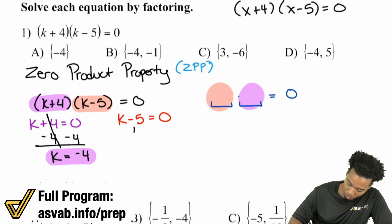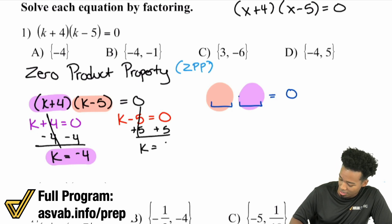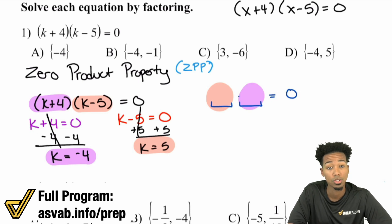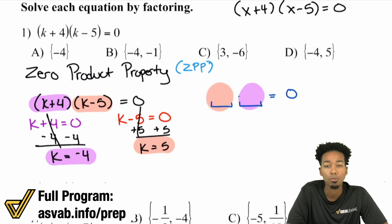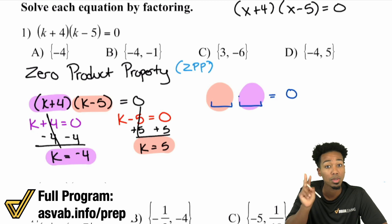Looking at the other side, we add five to both sides right here. It cancels out, and we have k equals positive five. That's the other answer. And so our answers to this equation are going to be negative four and positive five. That's it. Those are both of the answers. If we're trying to solve this completely, there are two answers here and we need to include both.